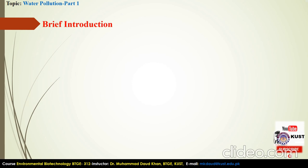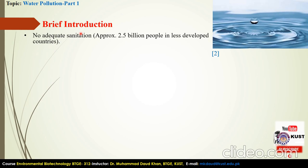As you know, water is the most important resource in our body and without it we can't think about our life. About 71% of the Earth is occupied by water, but despite this huge amount, very less — almost 1% — is available for our daily use. Almost 2.5 billion people residing in less-developing countries have a lack of adequate sanitation regarding water.